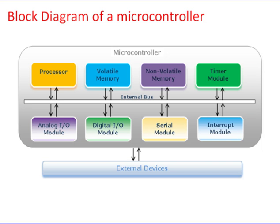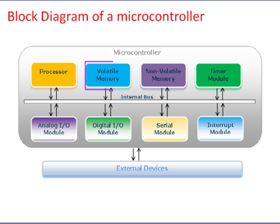Block diagram of a microcontroller. A microcontroller typically includes serial communication capabilities, interrupt controls, and analog I/O capabilities. The processor refers to the CPU of the microcontroller, containing the arithmetic logic unit (ALU), control unit, instruction decoder, and special registers including stack pointer, status register, and program counter.